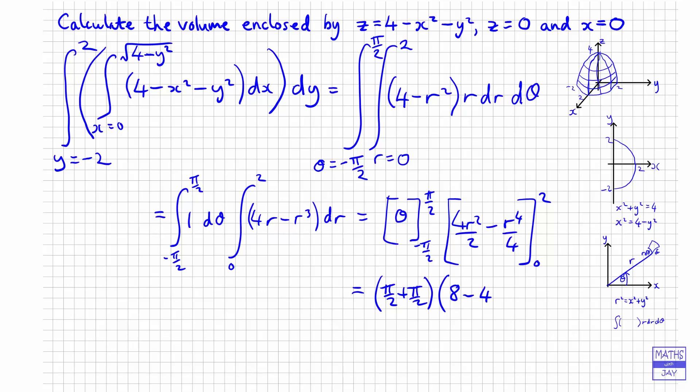And then when we substitute in 0, both the terms will be 0. So we've got pi times 4. So we find that we get 4pi. So the required volume is 4pi.